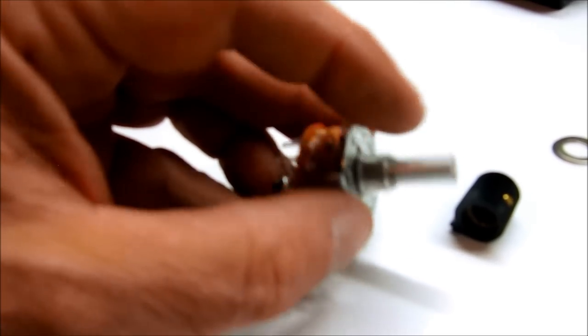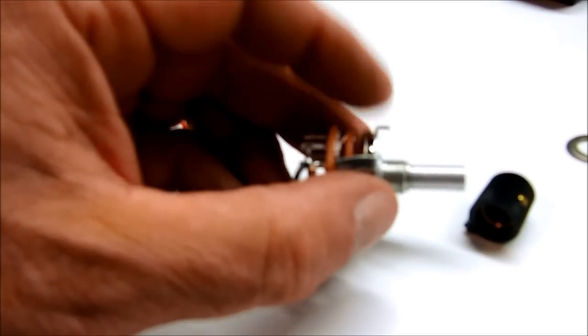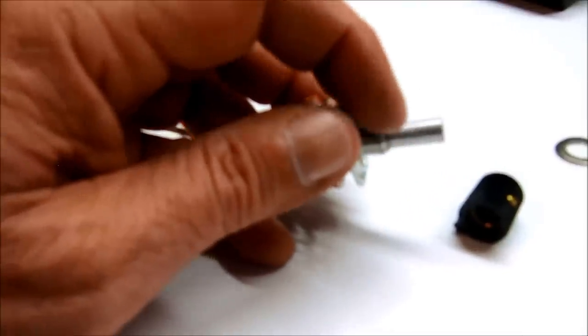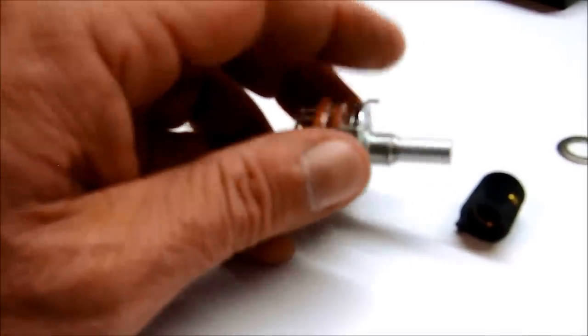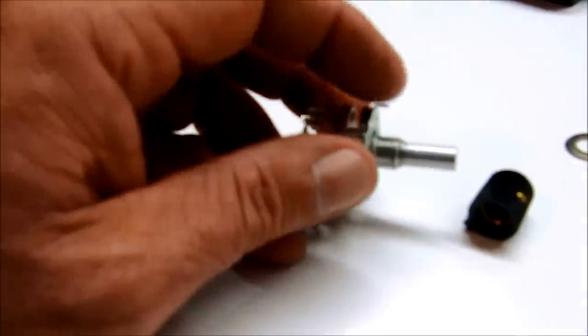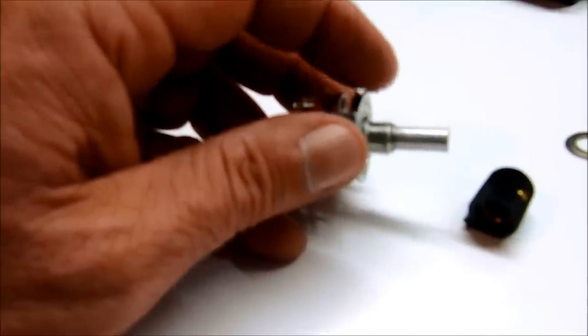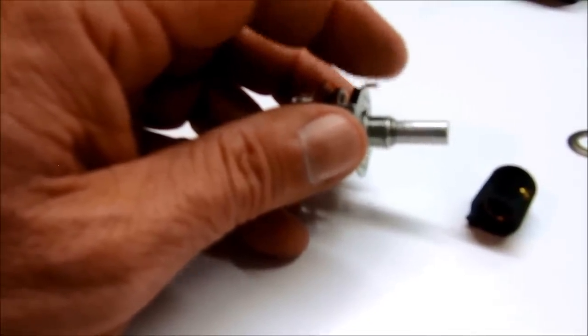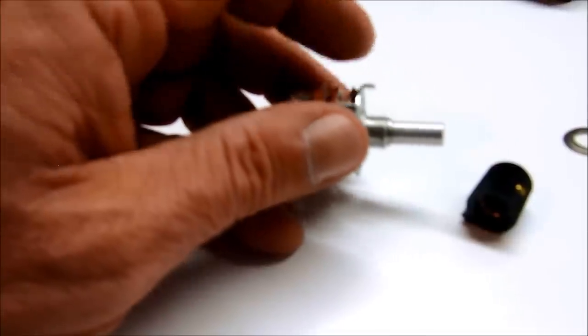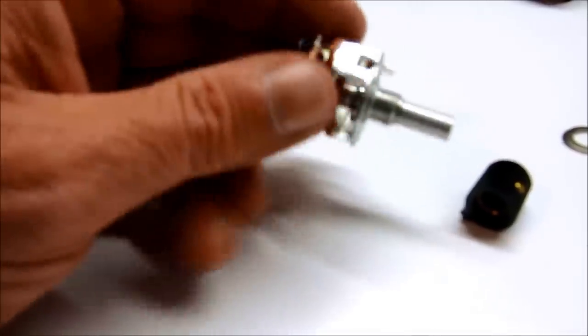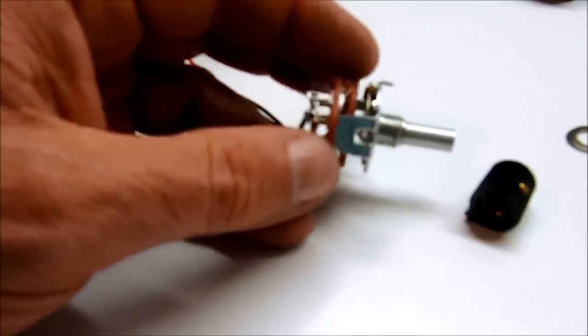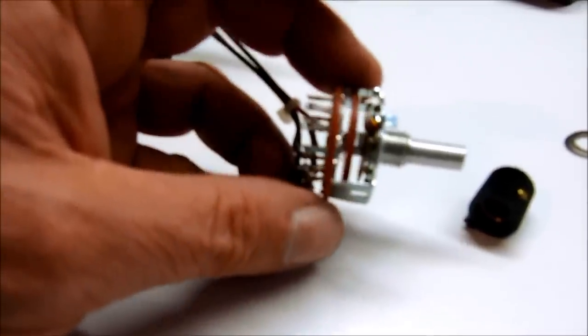Now one thing about this rotary switch, you'll notice there's a little tab up here that sticks out. So basically what I'm going to do is drill the hole the size that it needs to be for the rotary switch. And then I'm also going to cut a little notch in the project box so that this little tab will slip in and that will keep the switch from rotating around when we rotate it after we tighten it down to the project box.